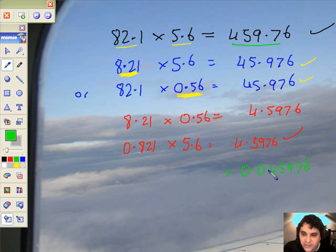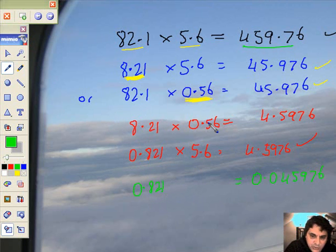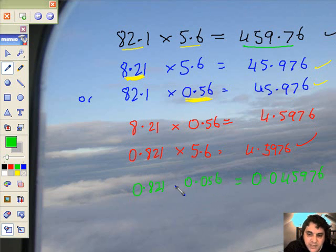So if I can reduce each part by 100, then I've done it. So 82.1, 0.821. 5.6, 0.056. Then you multiply up.